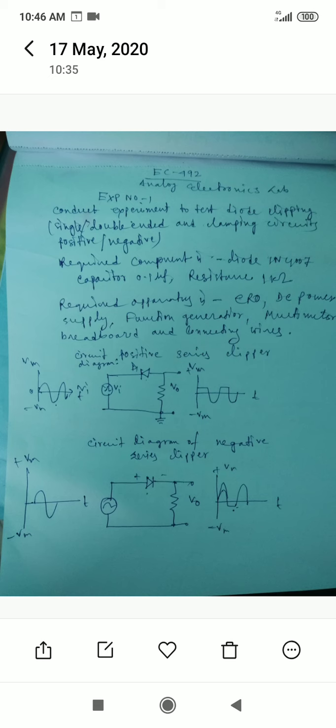Today we will study Experiment No. 1 of Analog Electronics Lab. Experiment name is Conduct Experiment to Test Diode Clipping Clamping Circuit Positive Negative.